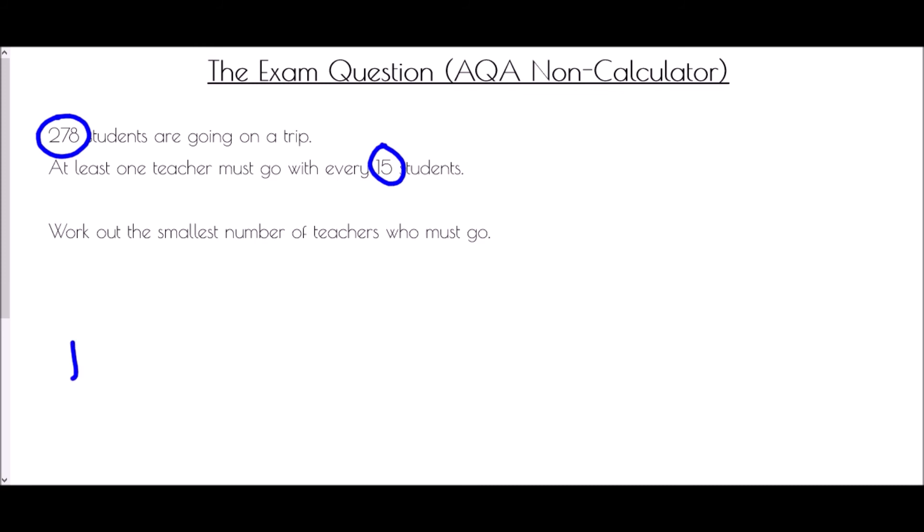And so we're asking how many 15s go into 278. And so first of all how many 15s go into 2? It is 0. And that leaves us with 2 left over. How many 15s go into 27? Well that is just 1 with 12 left over. Now we're probably going to have to just make a quick list of our 15 times table here.